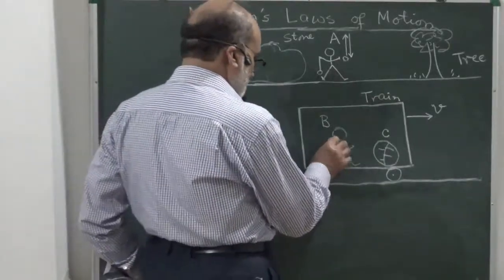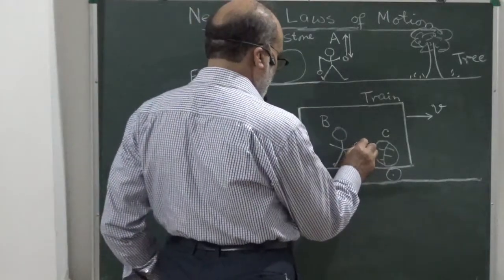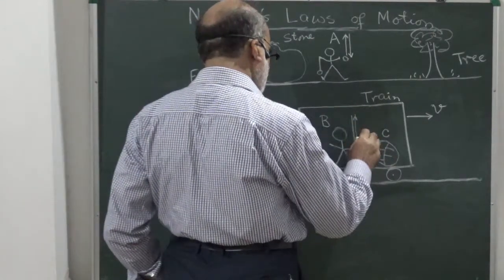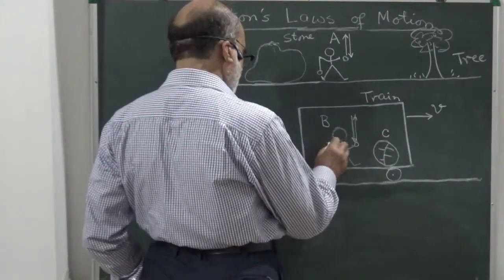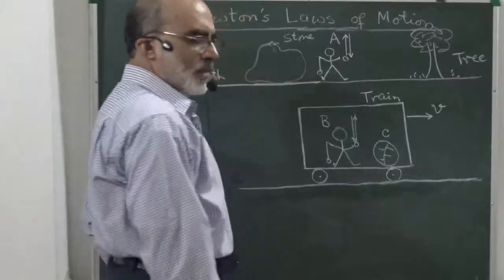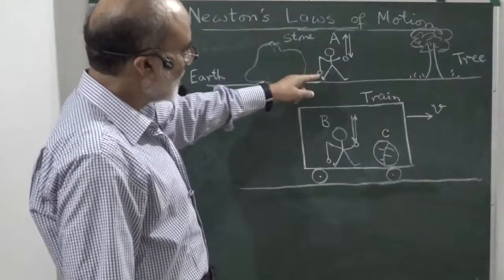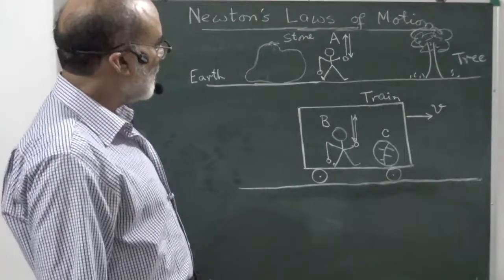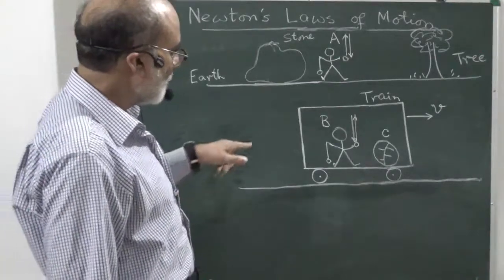B performs the same experiments — throws a ball up, it returns to the same point, and the pendulum hangs vertically down. So B also claims he is at rest and A is moving. Which one is at rest and which is in motion all depends upon the reference frame from which you are measuring.